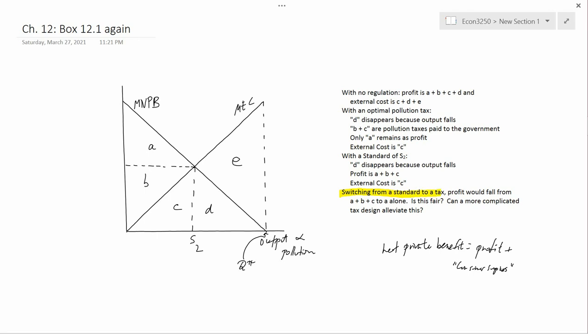If you switched from a standard to a tax, with the standard profit was a plus b plus c, and with the tax profit is only a. So profit would fall from a plus b plus c to a alone. The question I want to ask is, is this fair? Certainly the company would complain if you suggested moving from a standard to a tax because it's going to lose b plus c.